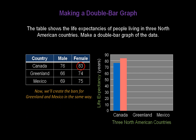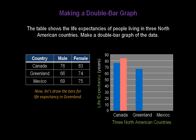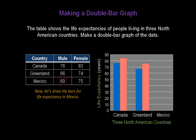Now we'll create the bars for Greenland and Mexico in the same way. Males in Greenland live to the average age of 66 — locate 66 on the graph and draw our bar up to 66. Females live to age 74 in Greenland, so locate 74 on the graph and draw our pink bar up to that point. For Mexico, males live to age 69 — locate 69 on the graph and draw our blue bar up to 69. Females live to 75 in Mexico, so locate 75 on the graph and draw our pink bar up to 75.